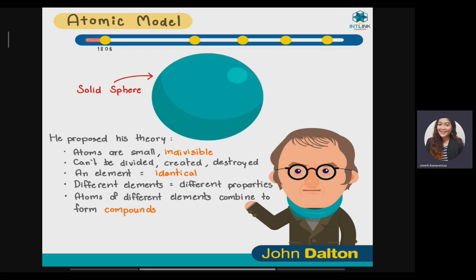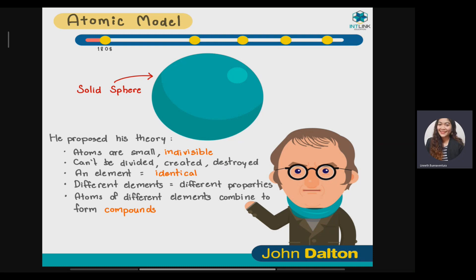According to John Dalton, an atom is a solid sphere — small and indivisible, meaning it cannot be created nor destroyed. All atoms of the same element are identical in their atomic properties such as boiling point and melting point. Atoms of different elements can combine to form compounds. Dalton, being a chemist, concluded that elements could bind with other types of elements to create compounds.